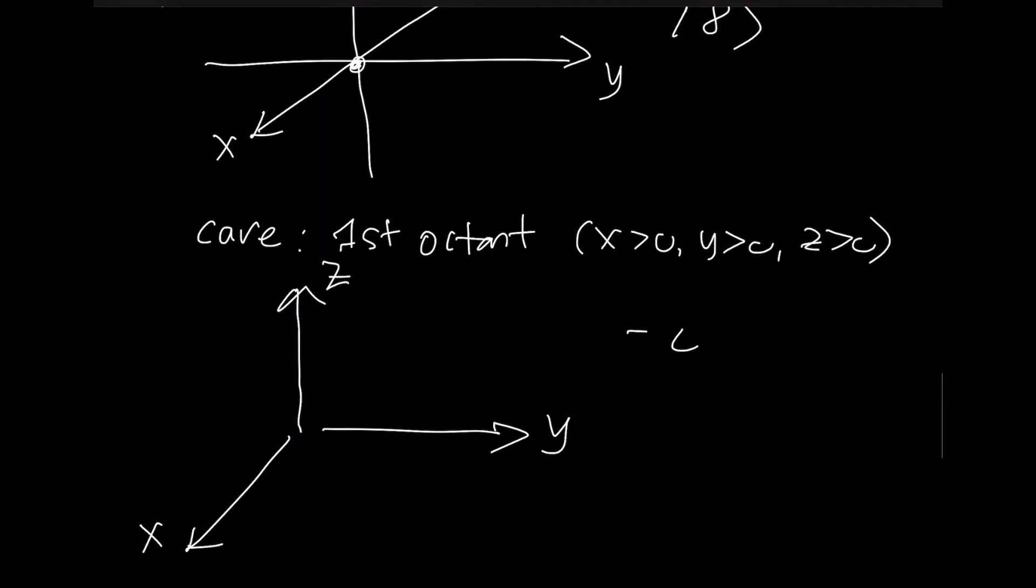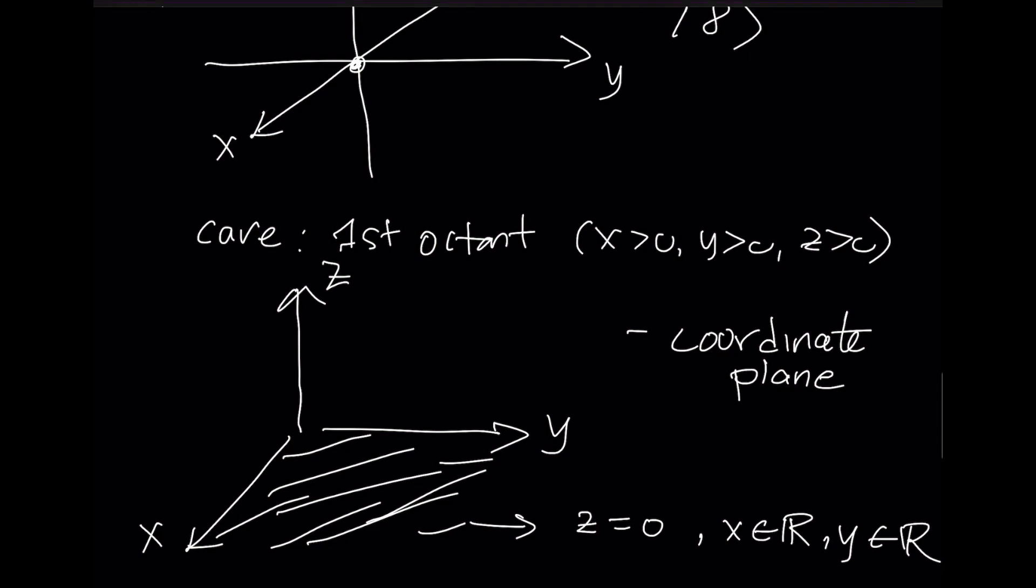Another thing that we're going to talk about are what are called coordinate planes. In this bottom part, this is going to be points where x is free, y is free, and z is equal to zero.